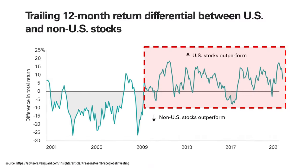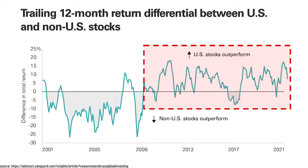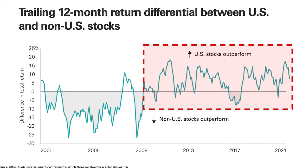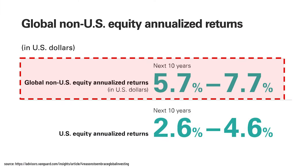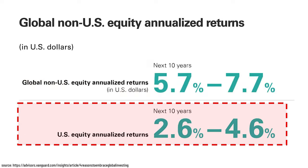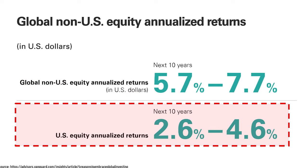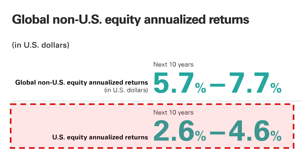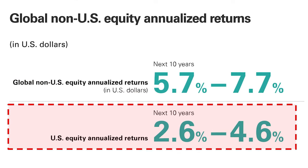Since the beginning of the bull market in 2009, US stocks have completely crushed global stocks. But did you know that international stocks are expected to outperform US stocks by over 3% per year in the next 10 years? That's why it makes sense to hedge your bets and invest in both US and global stocks.